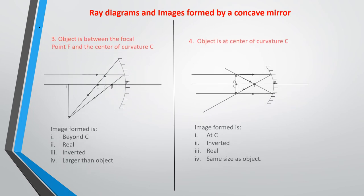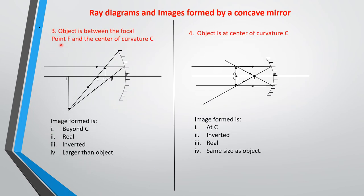Case three: the object is between the focal point and the center of curvature, i.e., between C and F. Rays parallel to and close to the principal axis, after hitting the reflecting surface, are reflected through the principal focus and center of curvature. The image formed is beyond C — it is real, it is inverted, and it is larger than the object.